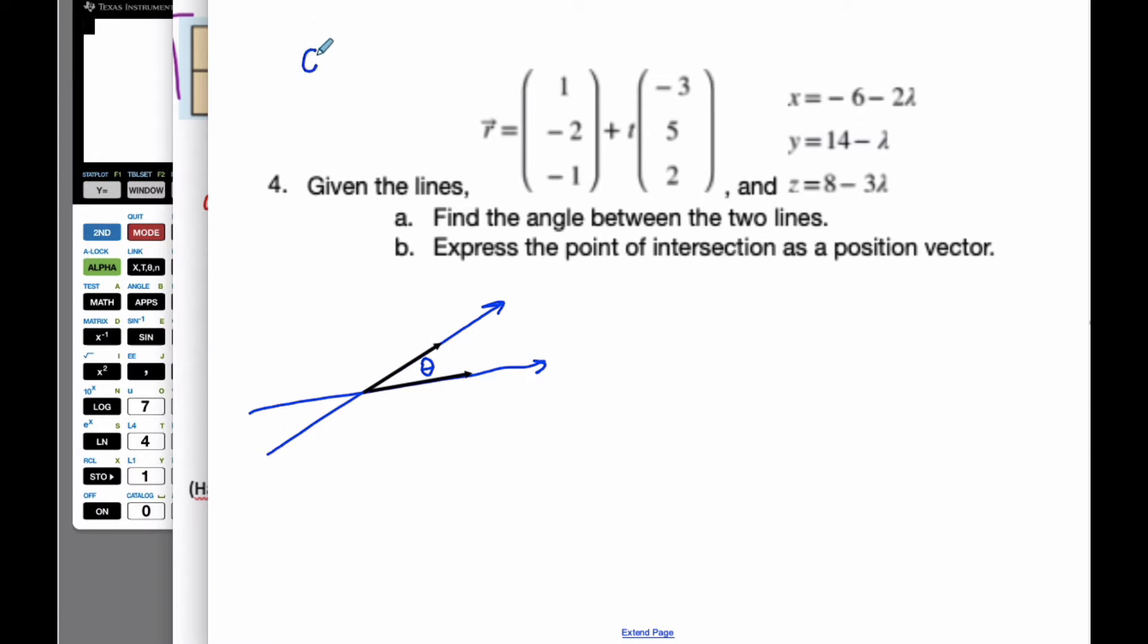Using the direction vectors, I can dot product them because when I use the dot product or scalar product, cosine of theta, I can find the angle theta between the two. So using this idea here, here is my a vector, here is my b vector.